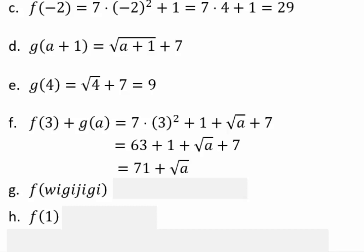Let's take a look at f of wiggijiggy. Wiggijiggy is really nothing — it's just a made-up word. The reason for that is to see if you can process what to do when you have to evaluate f of something you have not seen before. If you did not attempt that, please pause the video and see what you can write. The answer is 7 wiggijiggy squared plus 1. The reason to evaluate things you haven't seen before is to prepare your mind to become used to unseen quantities so you understand the process and not just do it mechanically.